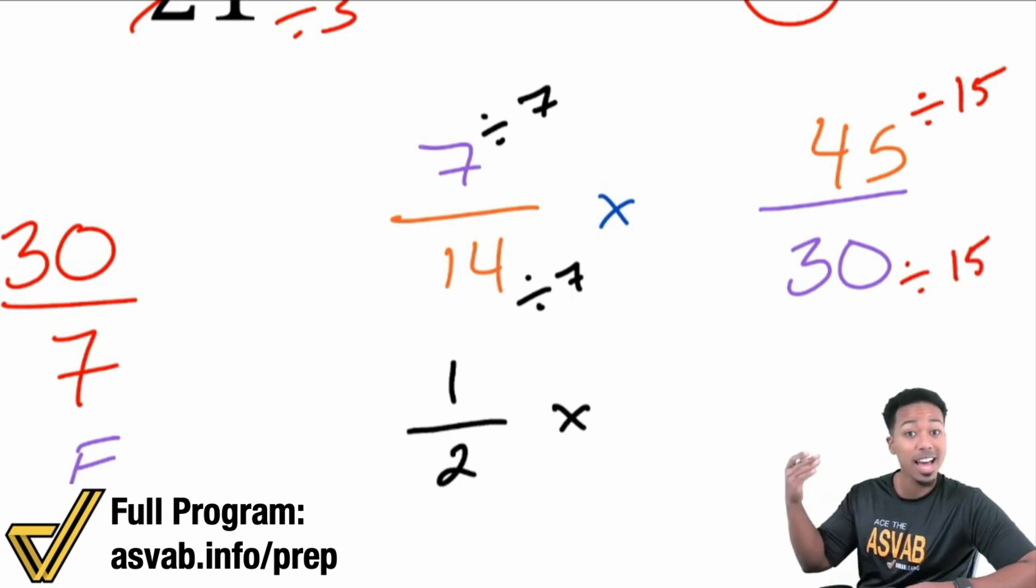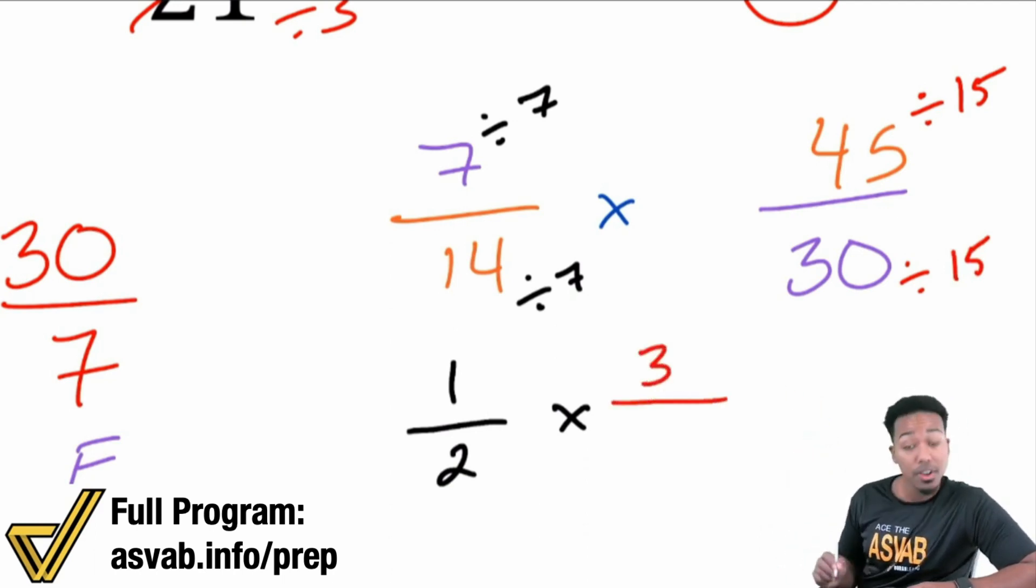Guess what? Right over here, I can divide 45 by 15 and 30 by 15. Remember, whatever you do to the top, you do to the bottom and vice versa. And so 45 divided by 15, that is 3. 30 divided by 15, that is 2. And we have 3 over 2.